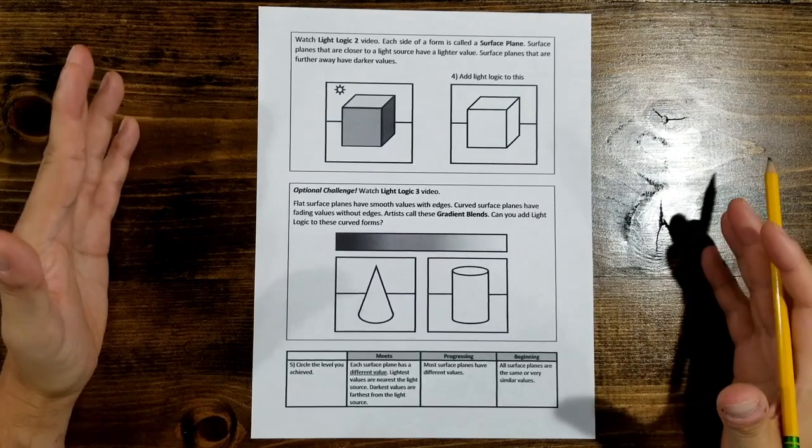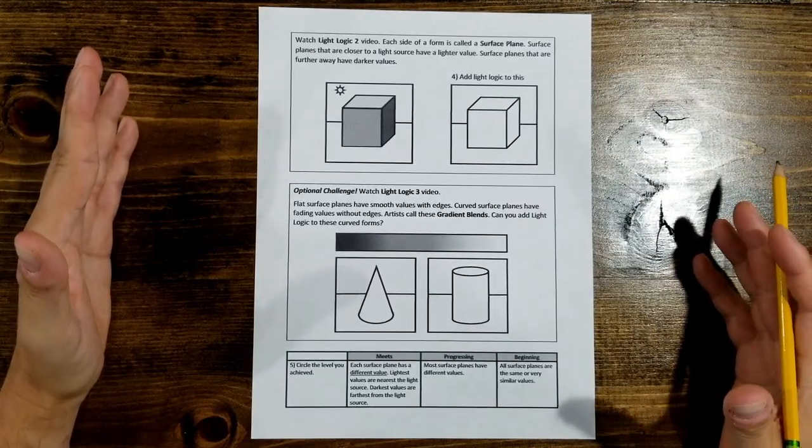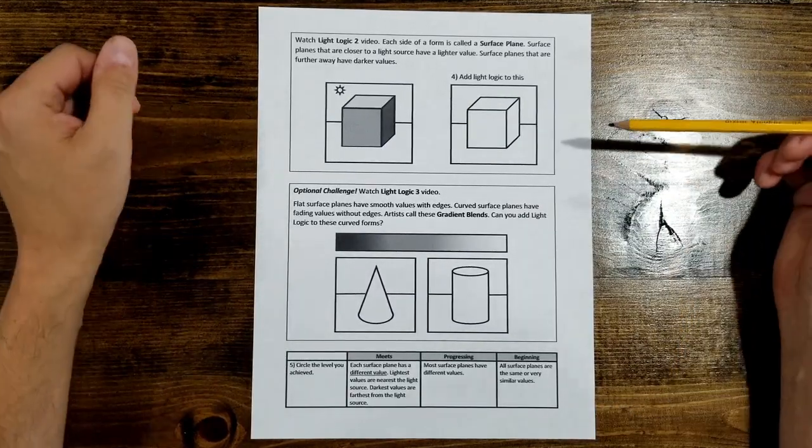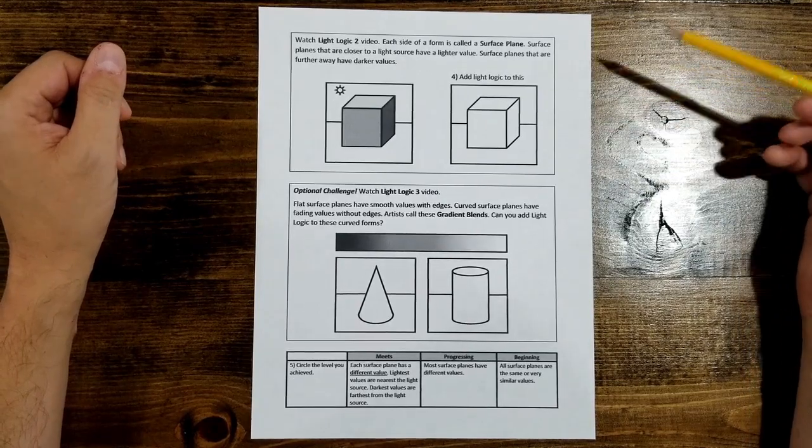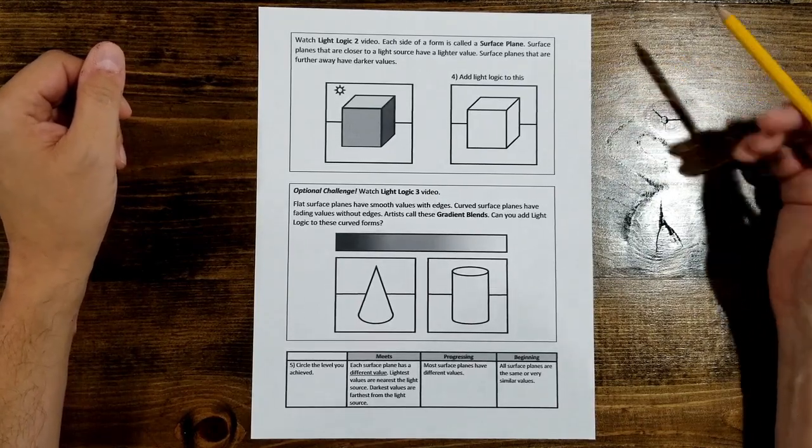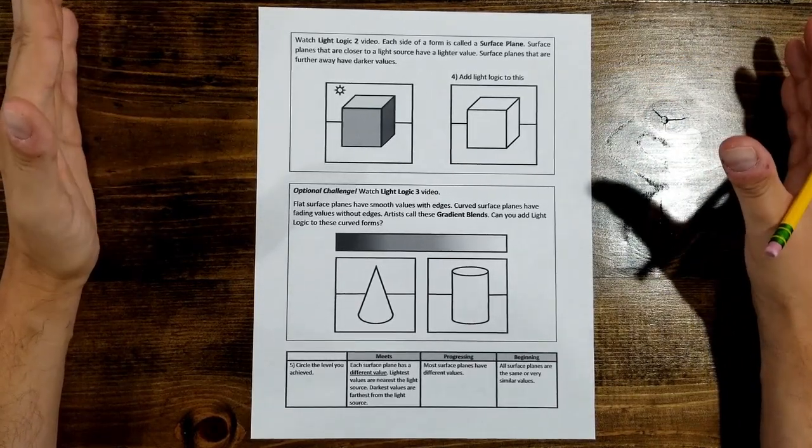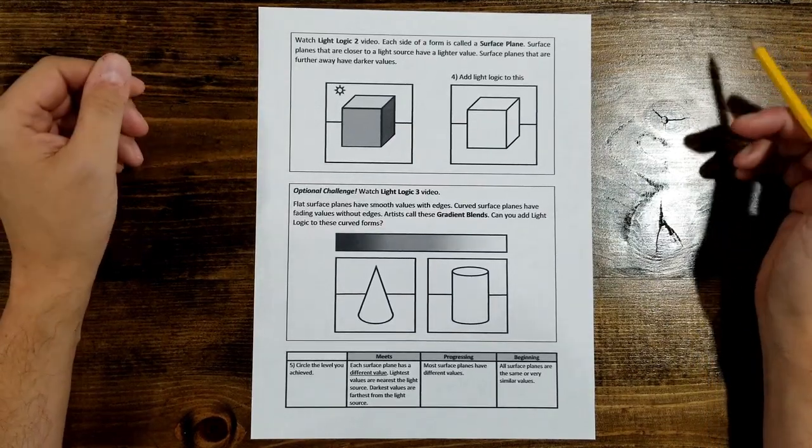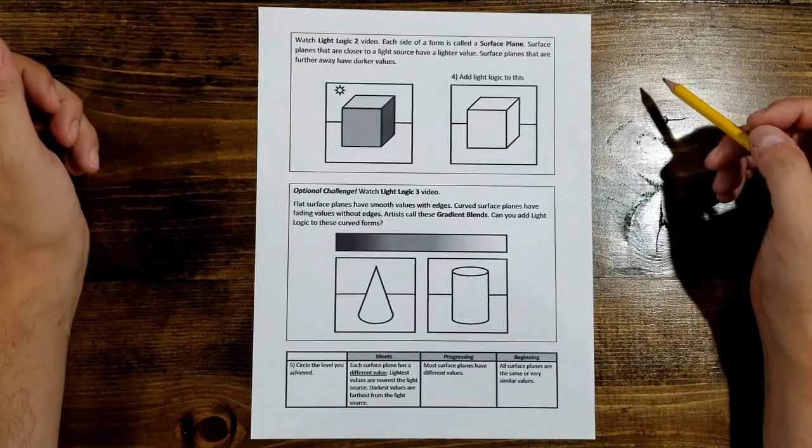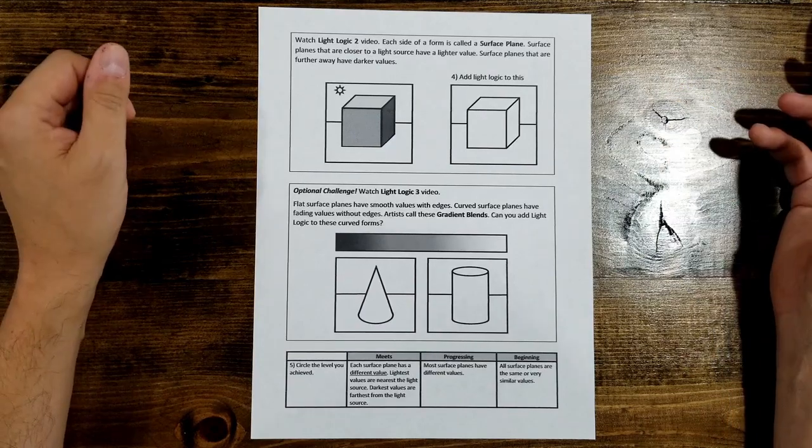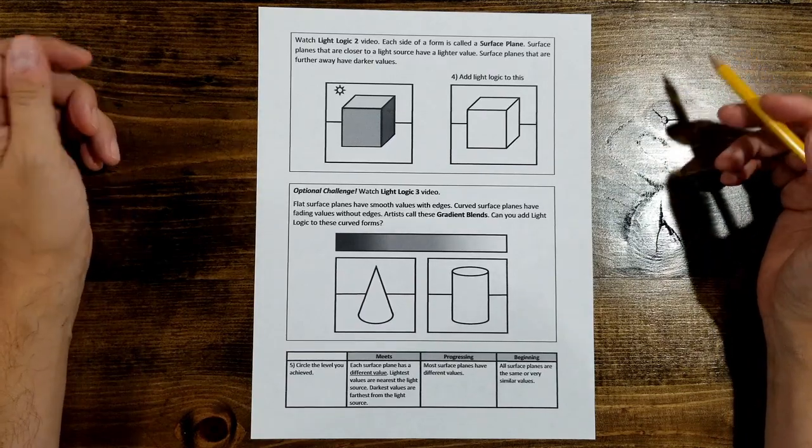Now this is the other side of that light logic worksheet that's in your sketchbook. Today we're going to put what we know about those two things to work on light logic. Light logic is the relationship between the lights and the shadows. If you know where one is, it's easy to figure out where the other is.